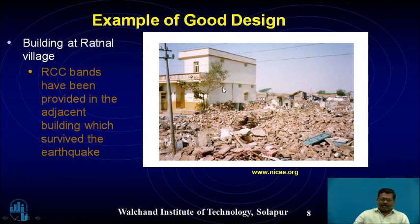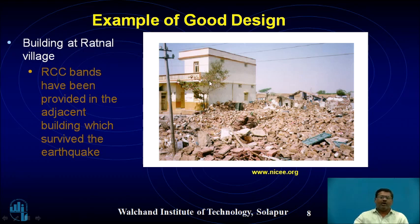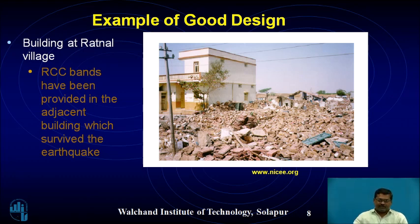Looking at photographs of earthquake damage, in Ratnan village all structures collapsed except one building which survived. The reason this building survived is that RCC bands were provided at different levels. Only the provision of this one earthquake-resistant feature — RCC bands — allowed that building to survive while all other structures failed.